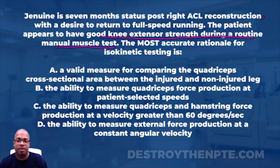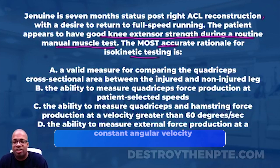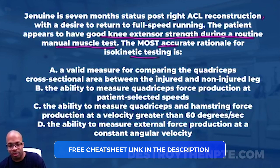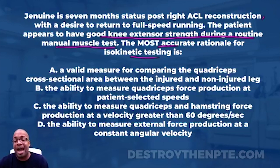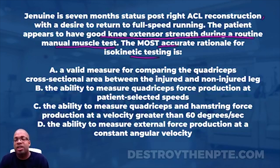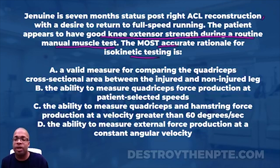The last part of the question asks: what is the most accurate rationale for isokinetic testing? For ACL reconstruction patients returning to sport, isokinetic testing is a more reliable and accurate way of determining someone's likelihood of having another injury. It gives a really accurate reading of how much force the patient can produce. The question is asking us to identify the best rationale for choosing isokinetic testing over manual muscle testing.